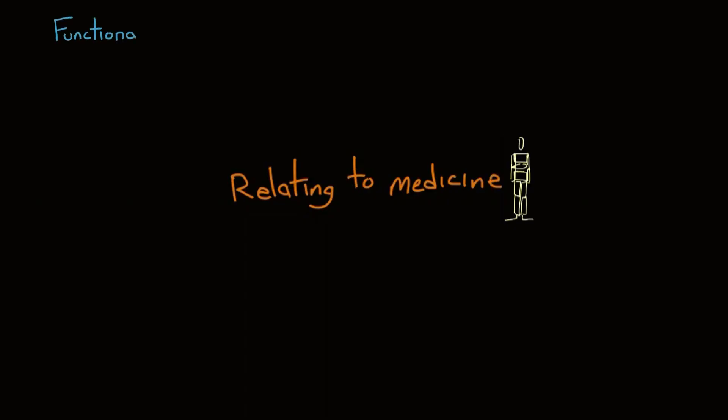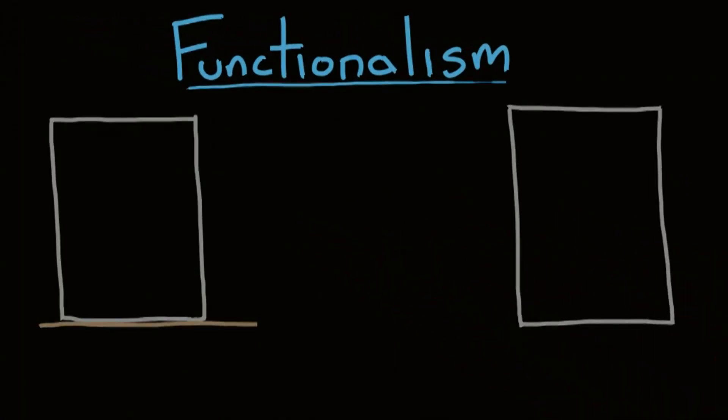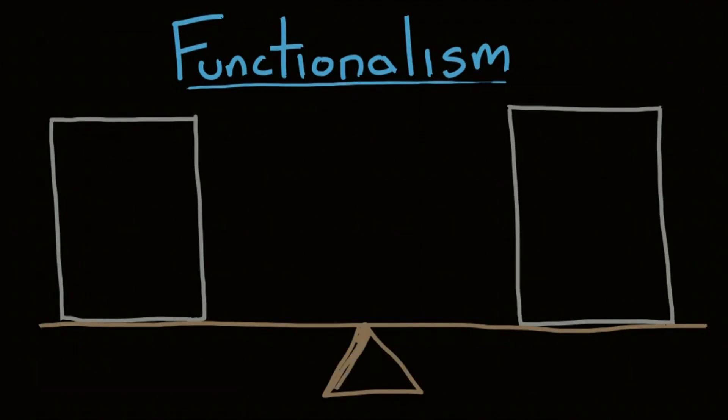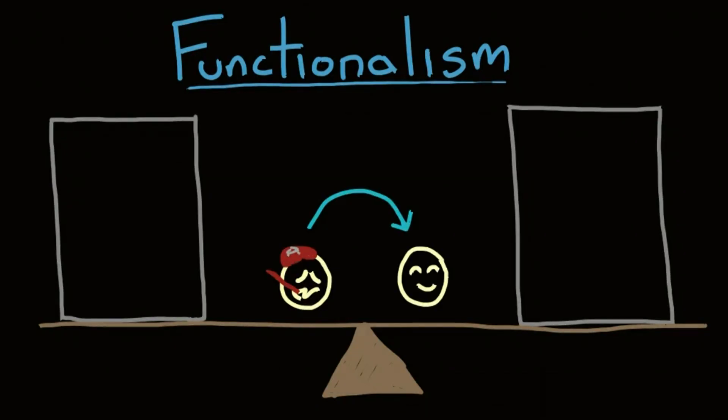First off, we have functionalism. Remember, functionalism is a theory that different institutions in a society adjust to minor changes to keep the society stable and functioning. If we look at the function of medicine in society from a functionalist point of view, we're asking what is the purpose of medicine? Well, when people become ill, medicine ensures that they return to a functional state so they can contribute to society.